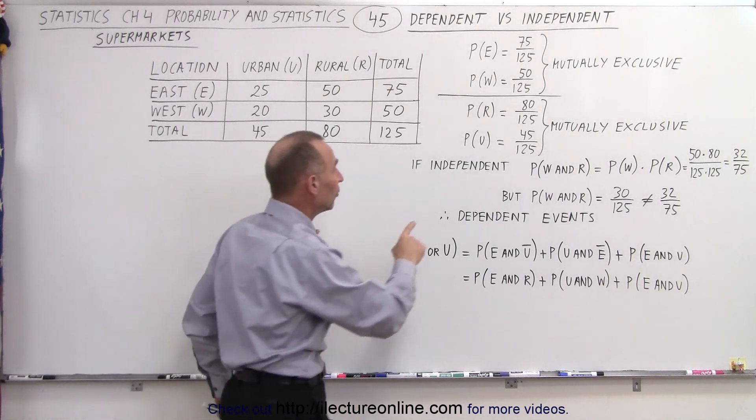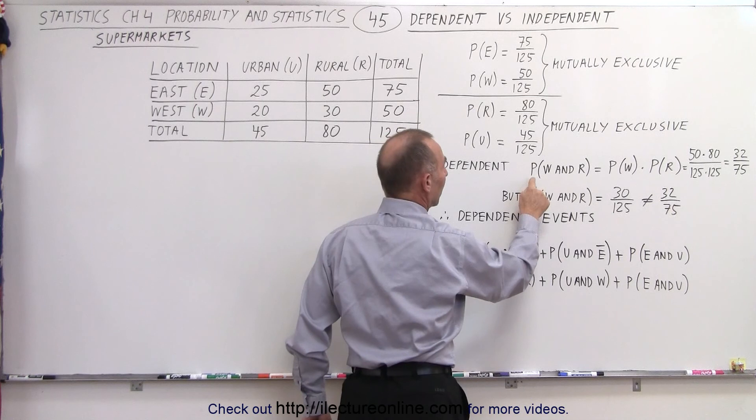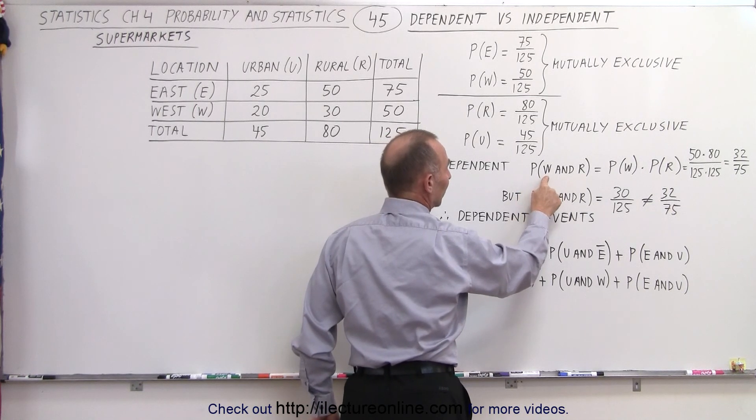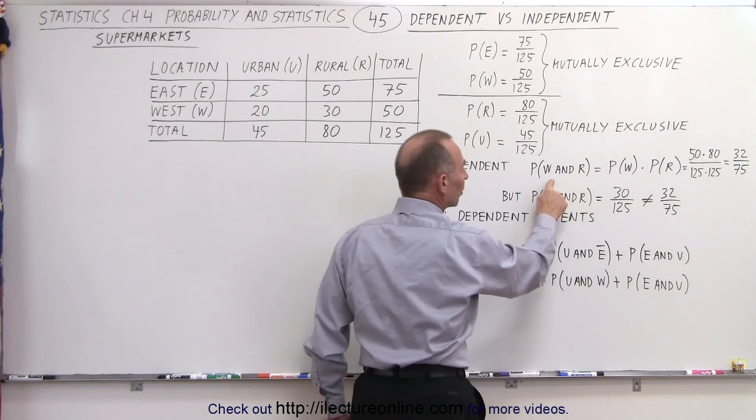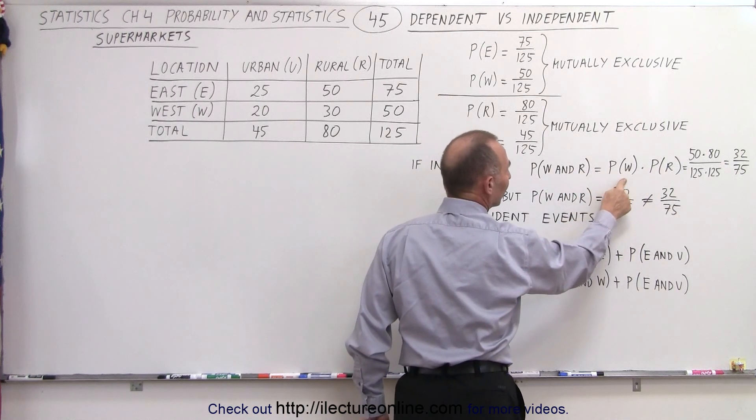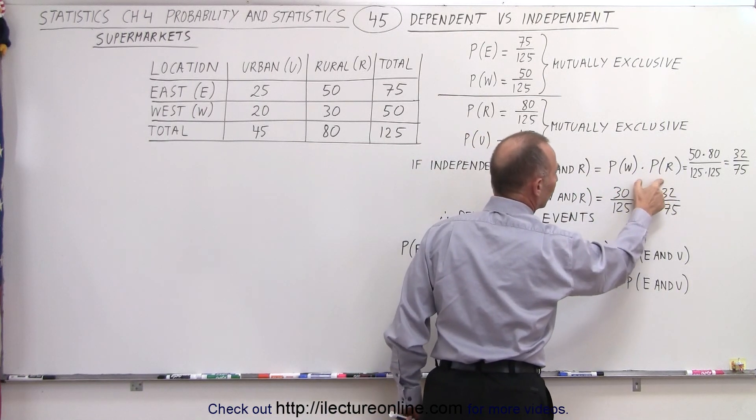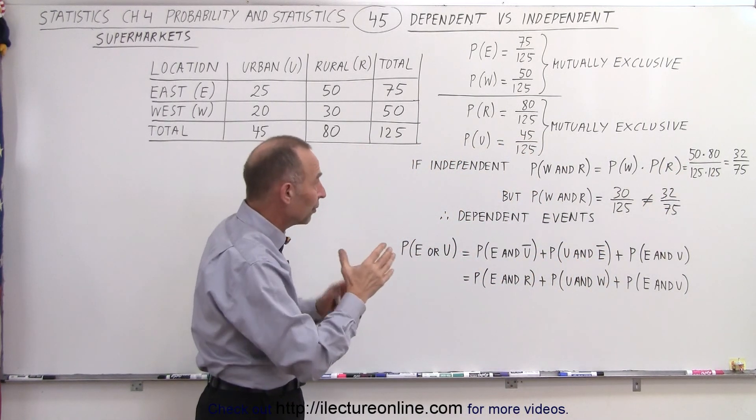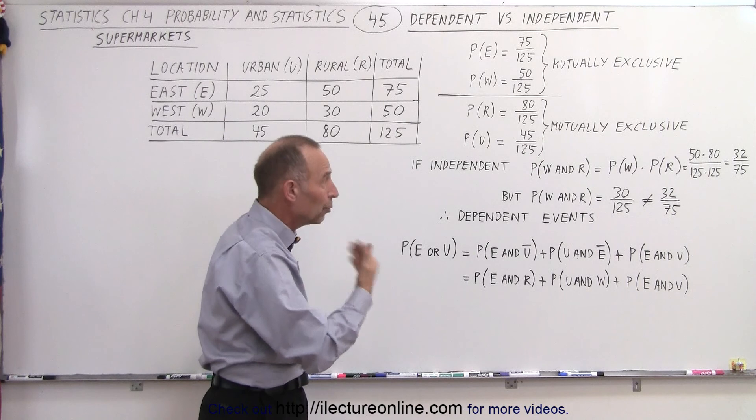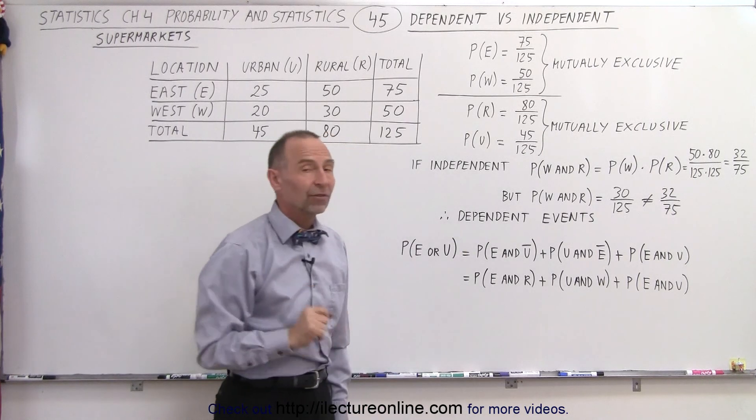And we can say that if they were independent, then if for example we look for the probability where we have supermarkets in the west and they're also rural, then we should be able to multiply the probabilities if they're independent events.